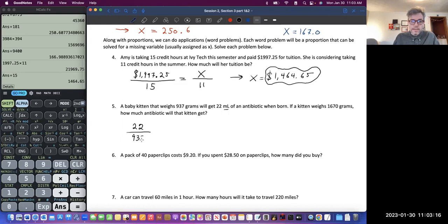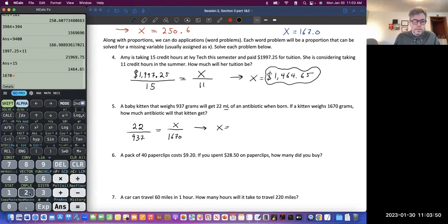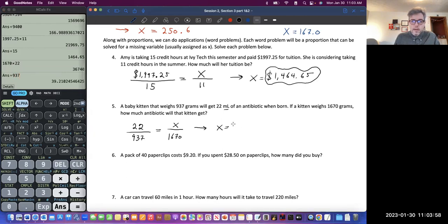So let's do that. 22 milliliters for 937 grams would be, and then this kitten weighs 1,670. That X should tell me how many milliliters this kitten would get. So we're solving for milliliters. How many milliliters will this kitten get if the medicine is proportional? How would I do that? I'm going to multiply the weight times the milliliter, and then divide by this weight here. So 1,670 times 22 divided by 937, and how should we round?